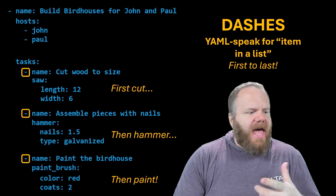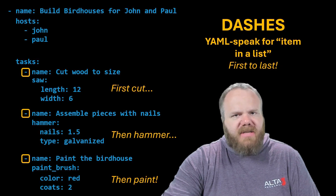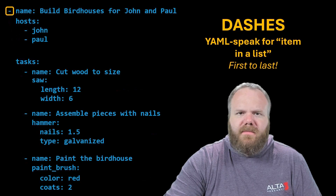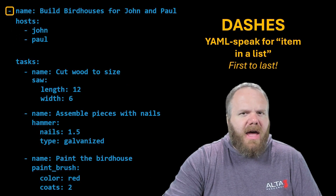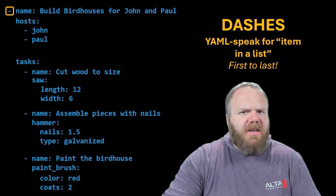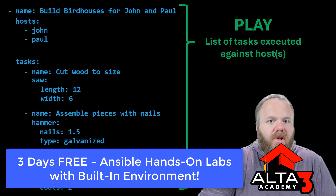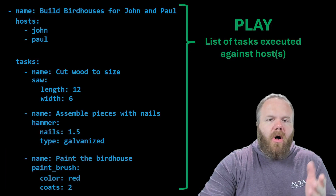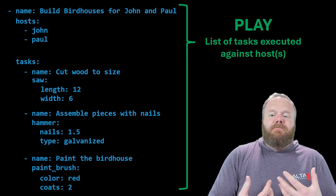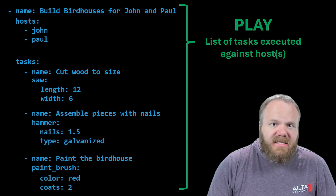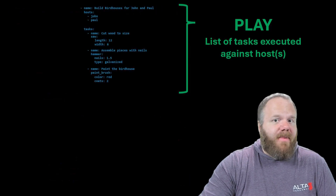But then there's this dash up here at the very tippy top, and I don't want to explain that just yet because we need to take a step back. The whole thing you're looking at here — where we're saying that both John and Paul are going to have these three tasks executed against them — that is called a play. A play is just a list of tasks that are being executed against a host.